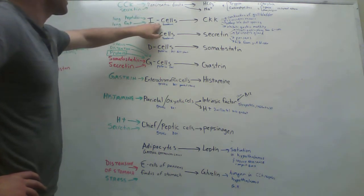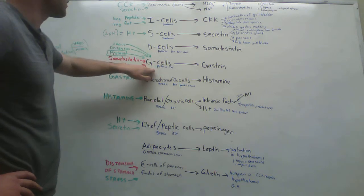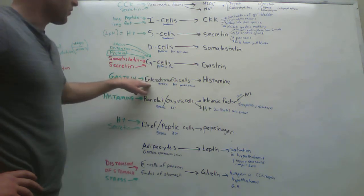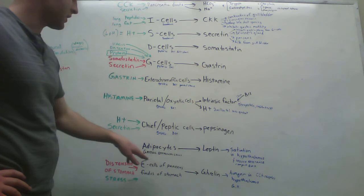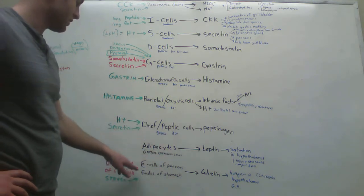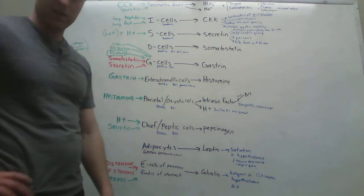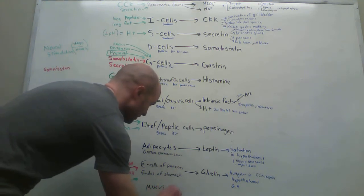Pancreatic ducts, I cells, S cells, D cells, G cells, E cells, P cells, enterochromaffin cells, parietal or oxyntic cells, chief or peptic cells, adipocytes, also gastric epithelial cells, E cells of the pancreas, also found in the stomach. I'm actually missing one on here, which is mucous cells.